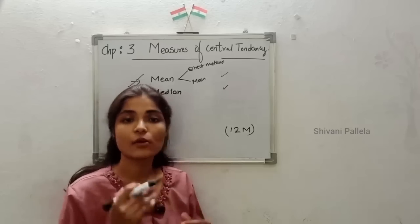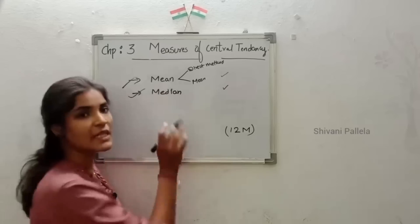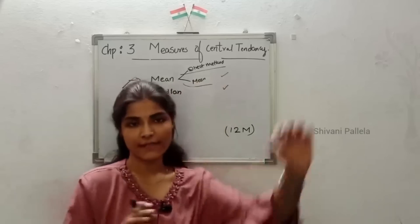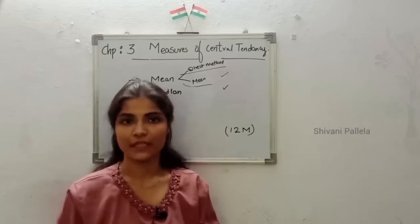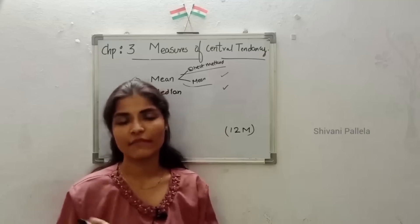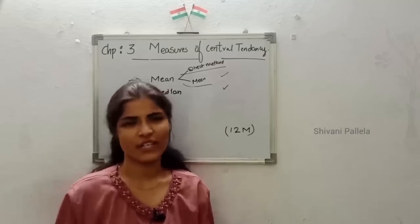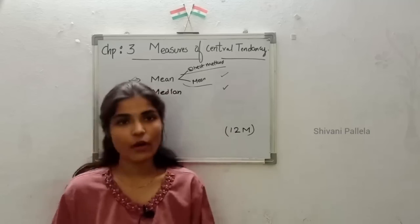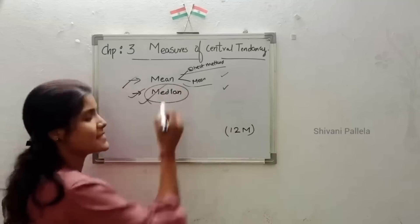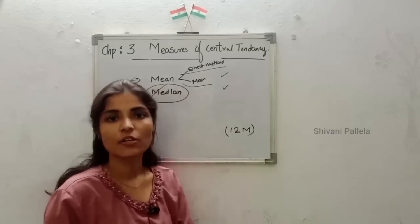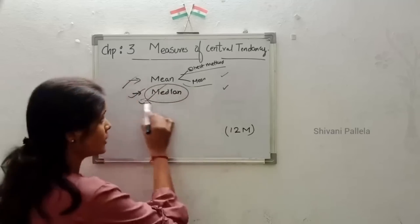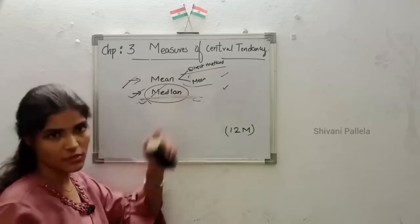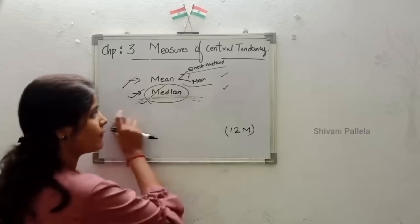In mean, you have two methods: direct method and the standard method. They will give data and ask you to find the mean, or find the mean using the assumed mean method. For median, it is super easy and has been asked many times in Part B question papers, so give preference to median. But you should learn both concepts.